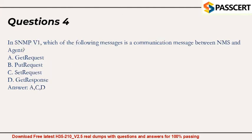Question 4. In SNMPv1, which of the following messages is a communication message between NMS and agent? A. Get Request. B. Put Request. C. Set Request. D. Get Response. Answer: A, C, D.